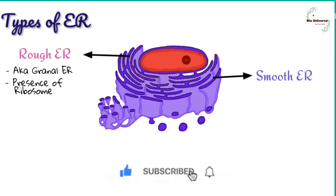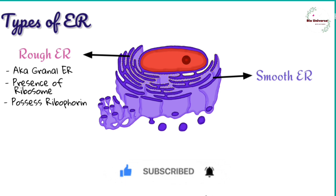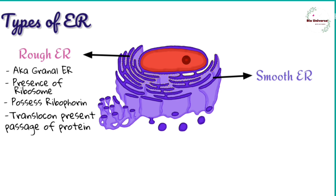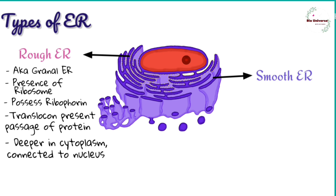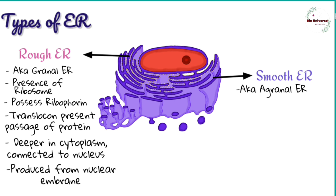Rough ER occurs by means of SRP receptors, also called ribophorins. An aqueous gated channel called translocon is present for the passage of synthesized proteins into the endoplasmic reticulum matrix. It lies deeper in the cytoplasm, is connected with the nuclear envelope, and can be produced from the nuclear envelope.